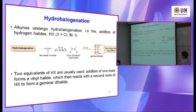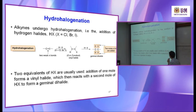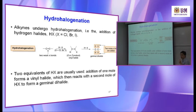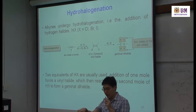When alkyne reacts with HX, one HX is added. The product could be E or Z — meaning syn or anti-addition. After the alkyne forms, it further reacts with a second HX to form a geminal dihalide. Check your textbook to see if it covers hydrogenation with Lindlar catalyst and sodium in ammonia — it may be in chapter 12 or 13.